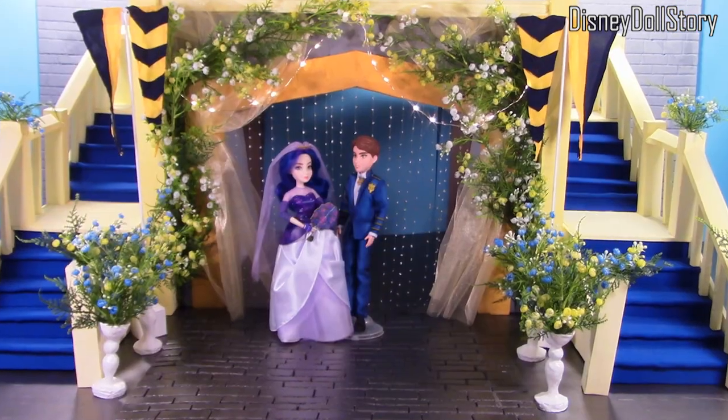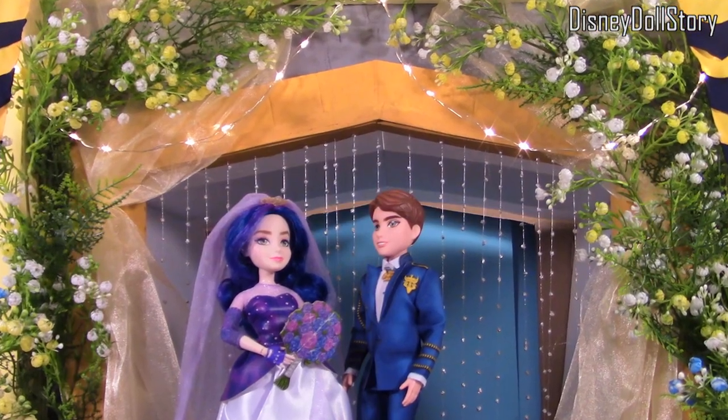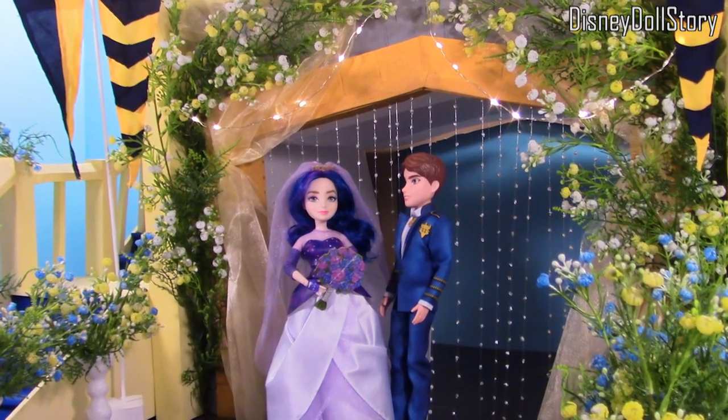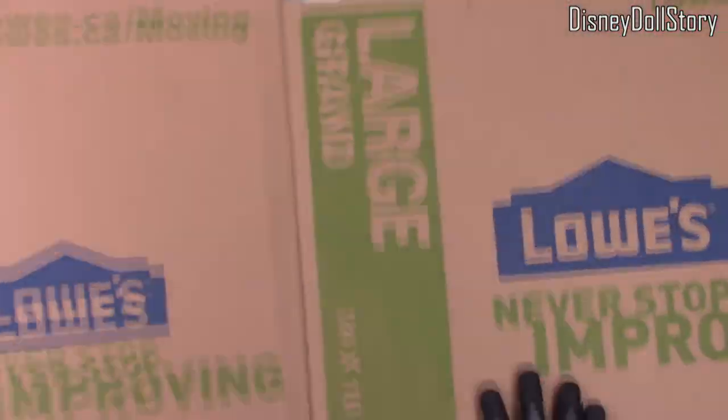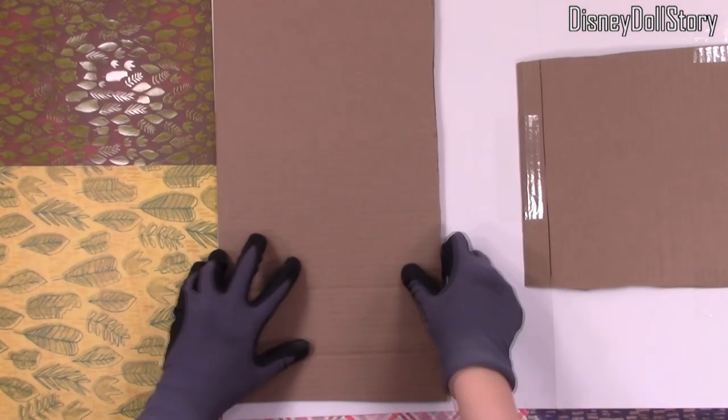This is how the altar looks like for the royal wedding. The inspiration for this place is the background image that came with the dolls in the packaging. It is basically an arch façade with two staircases on both sides.